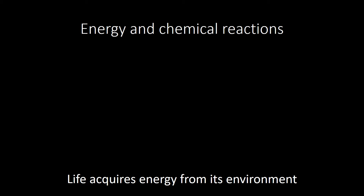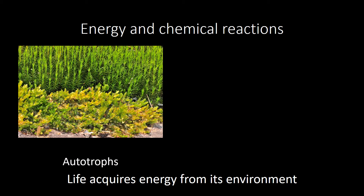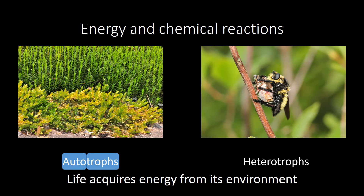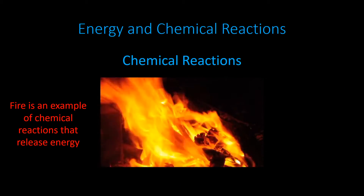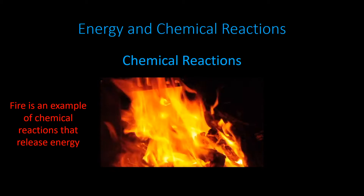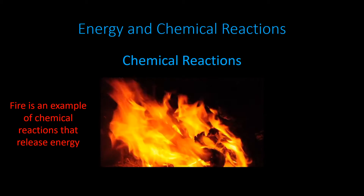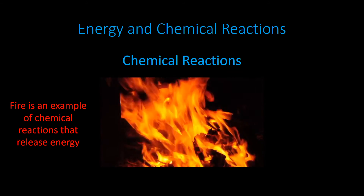Why in biology do we care about energy and chemical reactions? Life has to have energy to exist — it uses energy to create order and maintain homeostasis. All life acquires energy from its environment. If you're an autotroph — auto means self, troph means feeding — you're getting your energy from sunlight and storing it as some type of organic molecule. On the other hand, if you're a heterotroph, like a robber fly eating a bee, you get your energy from the foods that you eat. Regardless of whether you're a heterotroph or an autotroph, you rely on chemical reactions to use energy to do work — either extracting energy from your environment or using chemical reactions to build things, create order, and maintain homeostasis.